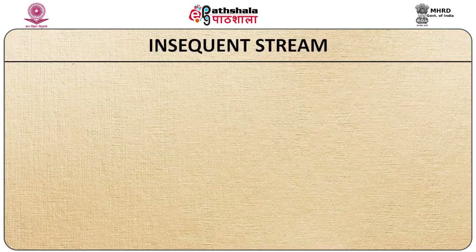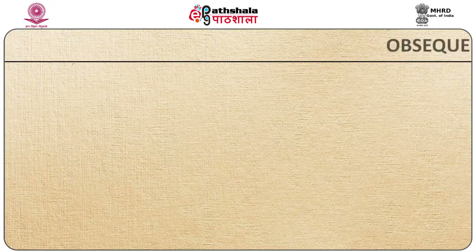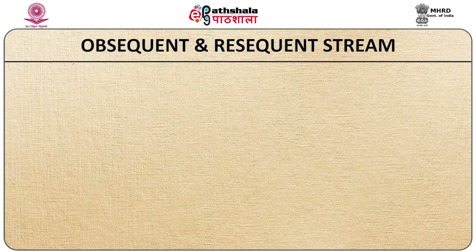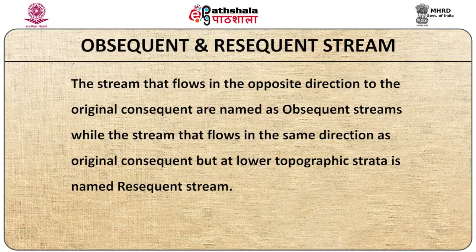Insequent streams, according to Davis, are those that show no apparent structural or lithological control. The stream that flows in the opposite direction to the original consequent is named an obsequent stream, while the stream that flows in the same direction as the original consequent but at a lower topographic strata is named a resequent stream.